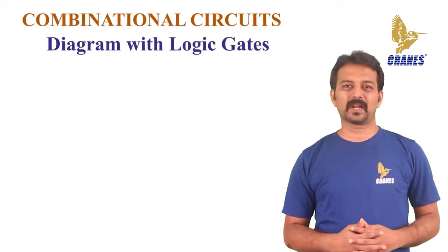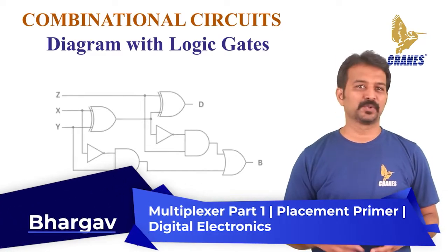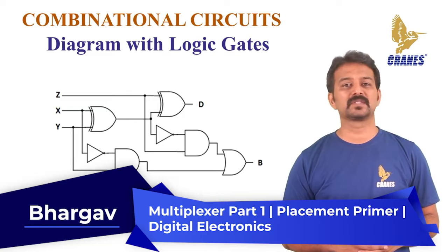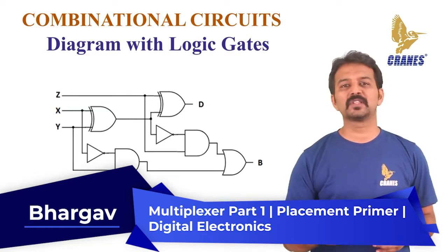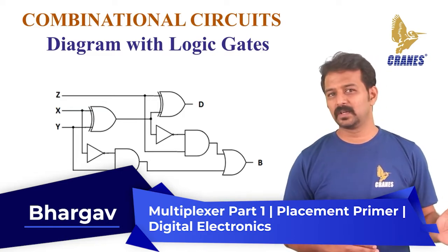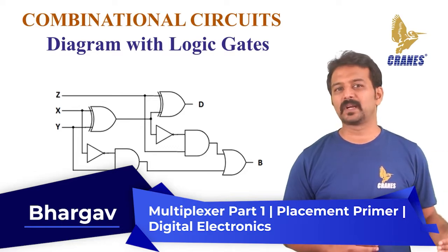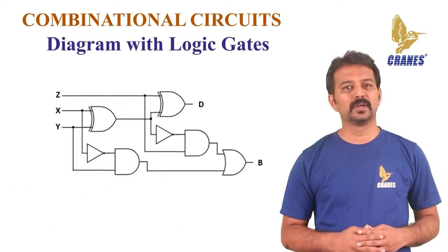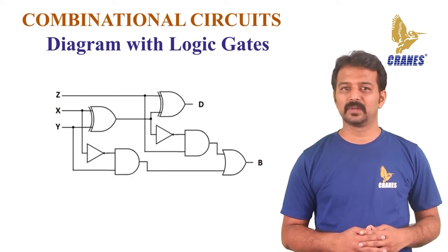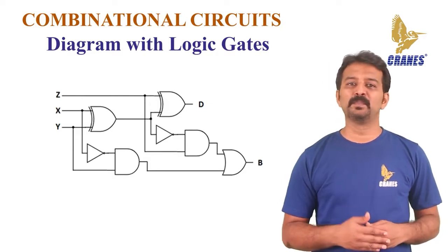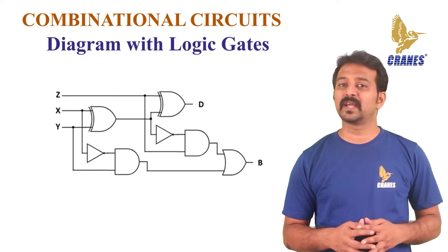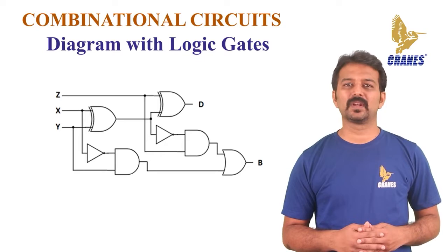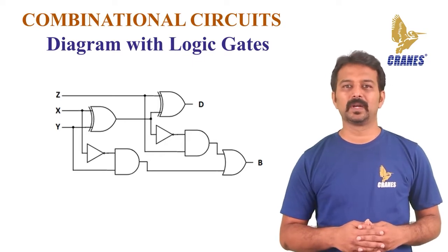The circuit diagram of a full subtractor using basic gates is as shown. This circuit can be done with two half subtractor circuits too. The difference output of the left half subtractor is given as input to the right half subtractor circuit. We offer the borrow-in bit across the other input of the next half subtractor circuit. Once more, it will give difference out as well as borrow out the bit.